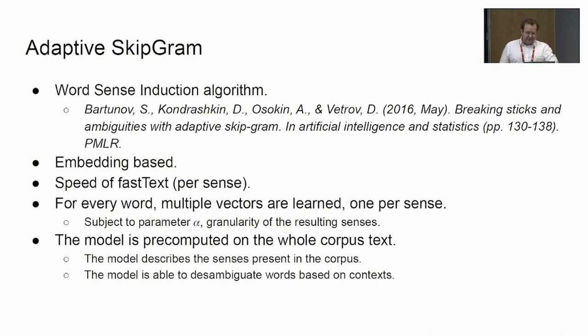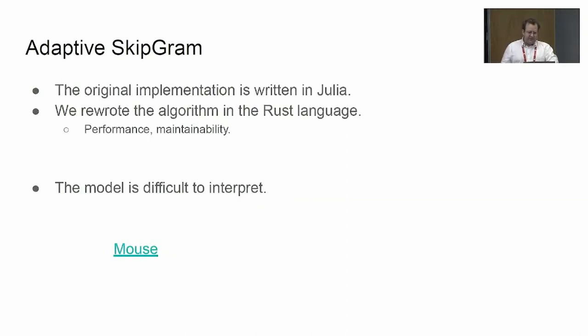As opposed to some transformer-based models which we can't really train in such a short time. So the model is trained on the whole text of the corpus, and then we store the model and we can query word similarity queries, and we can also disambiguate the word senses based on the context present in each corpus instance. The original implementation was written in the Julia language, which we found it difficult to use, so we rewrote the algorithm in Rust. I can recommend it—it's very performant and maintainable, and we can make more modifications to the algorithm.